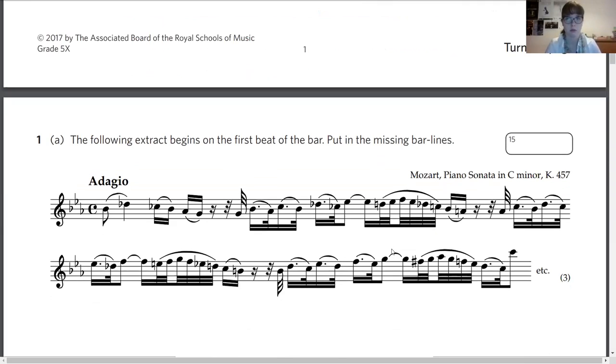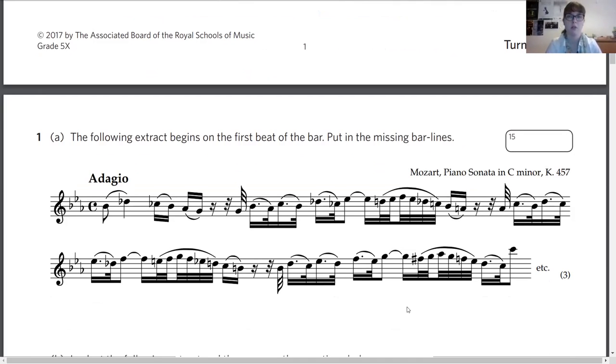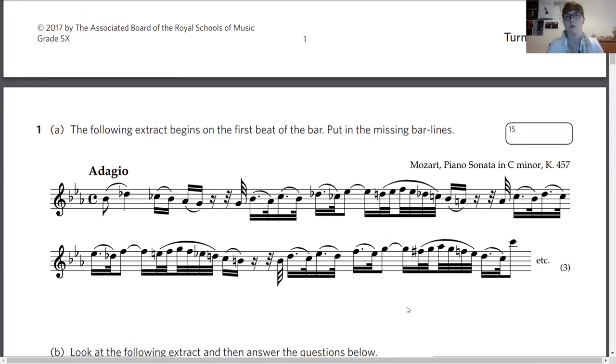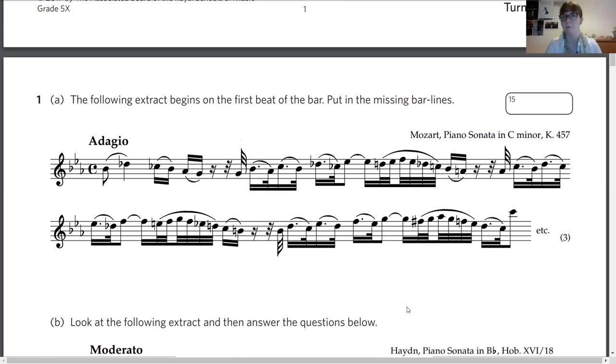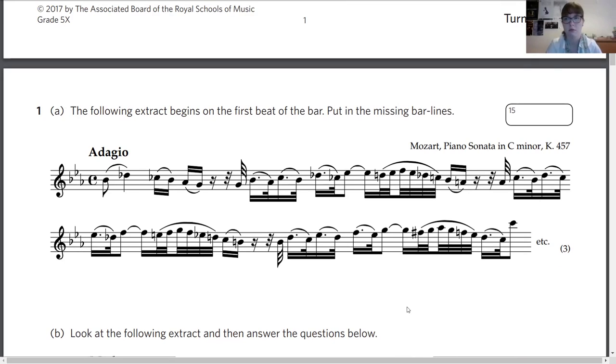Question one, part A: the following extract begins on the first beat of the bar. Put in the missing bar lines. This is worth three marks. You're probably going to want to consider the time signature here. Try and work out how long each beamed group lasts as well. Try and make things bigger, put them into even bigger blocks each time, just build up from the small to the big. Don't forget that you're always allowed to annotate on top of the scores, just as long as the answer's presentable. Work from left to right, don't try and jump in anywhere, always just go through really methodically.